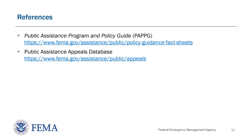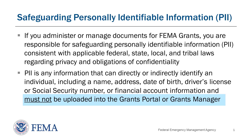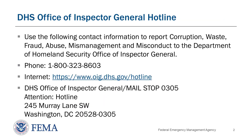For more information, please see the Public Assistance Program and Policy Guide and the Public Assistance Appeals Database. If you are working with any documents used for a FEMA grant, you are responsible for safeguarding Personally Identifiable Information, or PII. PII refers to anything that can be used to directly or indirectly identify an individual. Some examples of PII are names, addresses, social security numbers, and financial account information. This type of information must not be uploaded into Grants Portal or Grants Manager.